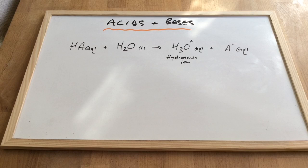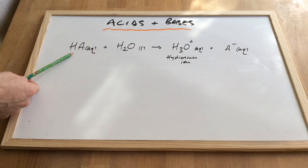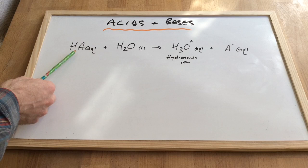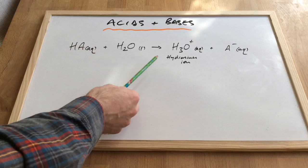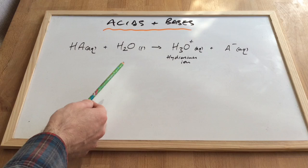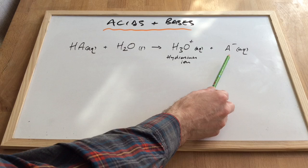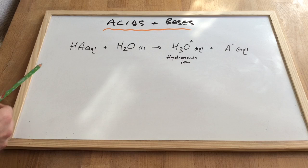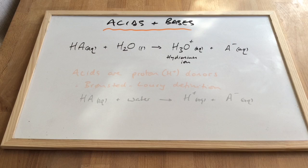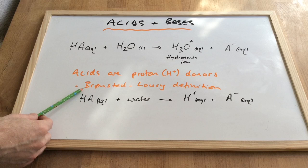If we start by looking at this equation on the board, I've got a generic formula for an acid, HA, and what we're doing is putting this in water. What's happening is the acid is donating its H+ ion, which joins with the water molecule to become the hydronium ion, H3O+. What's left of the acid is the A- ion. So effectively the acid is donating its H+ to water. Another name for the H+ ion is the proton, and so we call acids proton donors. This is known as the Brønsted-Lowry definition.